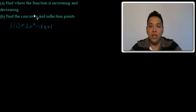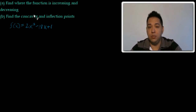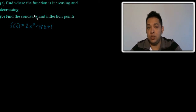Hi, I'm Gabriel and I'm here to help you with this problem. Today we're going to find the points where the function is increasing and decreasing. And for part b, we're going to find the concavity and the inflection points. Our function is f(x) = 2x³ − 18x + 1.